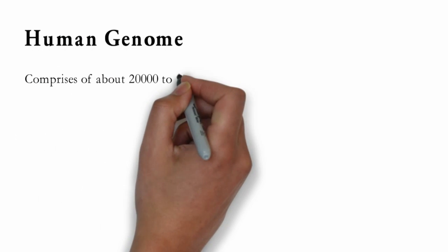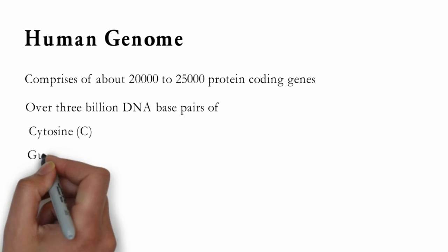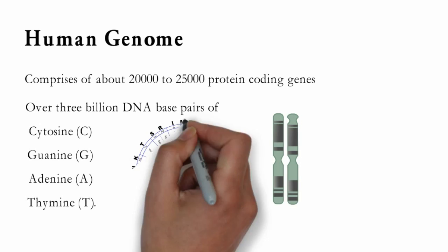Human Genome. Human genome comprises of about 20,000 to 25,000 protein-coding genes, with over 3 billion DNA-based pairs of cytosine, guanine, adenine, and thymine. These genes are responsible for different physiological and psychological traits.